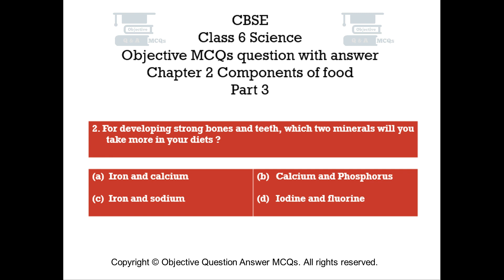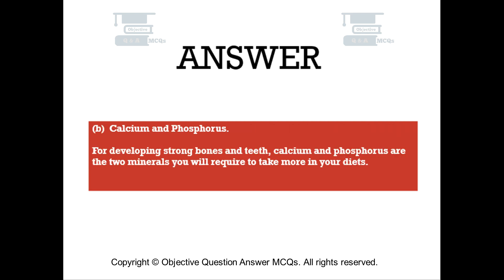Question number 2: For developing strong bones and teeth, which two minerals will you take more in your diets? Option A: Iron and Calcium. Option B: Calcium and Phosphorus. Option C: Iron and Sodium. Option D: Iodine and Fluorine. The right answer is Option B — Calcium and Phosphorus. For developing strong bones and teeth, Calcium and Phosphorus are the two minerals you will require to take more in your diets.